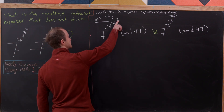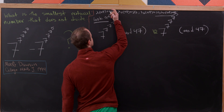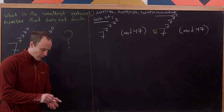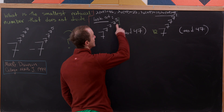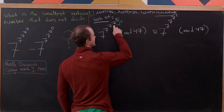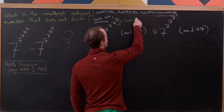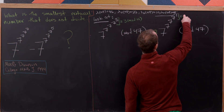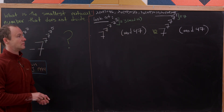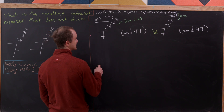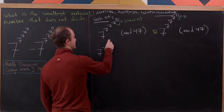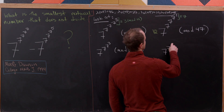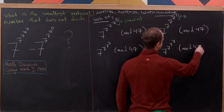Reducing the topmost exponents mod 4: 7 mod 4 = 3 for the first tower, and 5 mod 4 = 1 for the second. Now working one level down, mod 10: 7 cubed mod 10 = 343 mod 10 = 3, and 7 to the 1 mod 10 = 7. So the first tower reduces to 7^(7^(7^3)) mod 47 and the second to 7^(7^(7^7)) mod 47.